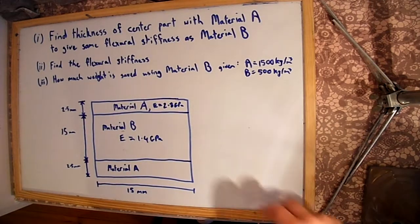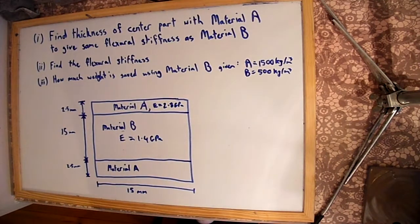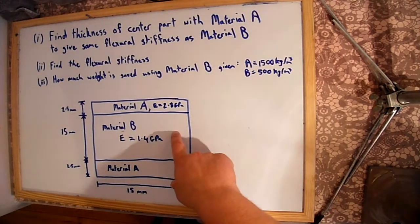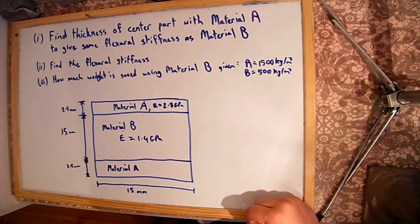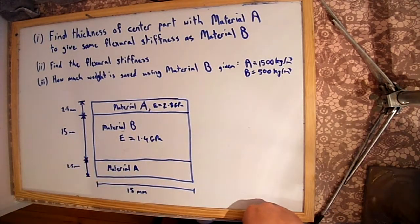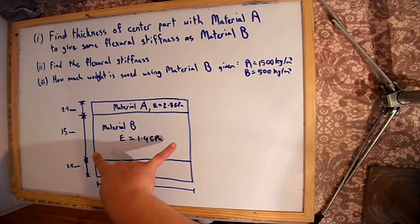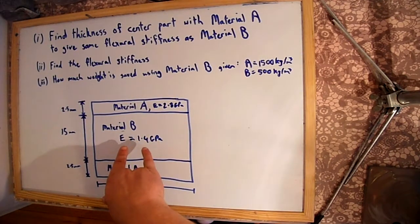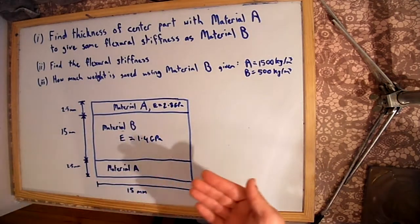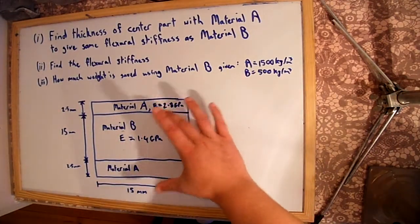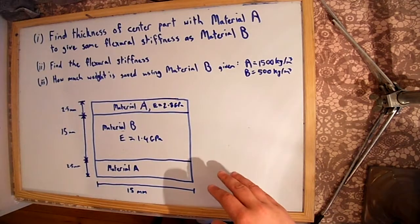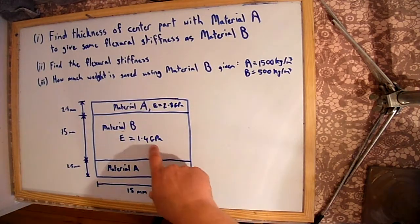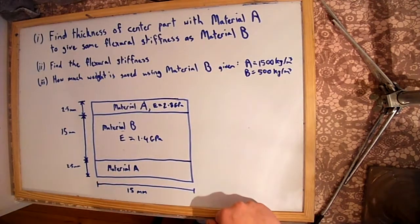Today we're looking at a sandwich beam problem with two different materials. Material B, with a lower Young's modulus, is in the centre, surrounded by two equal-thickness layers of material A on the outside. Part one asks us to estimate the width of the centre if it were made of material A to give the same flexural modulus. Part two finds the flexural stiffness, and part three determines how much weight is saved by using material B in the centre.